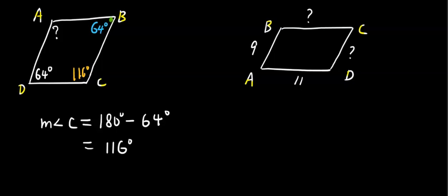And so angle C is 116. Now go back to the first rule. If it is a parallelogram, opposite angles are congruent. Therefore, angle A is also 116.